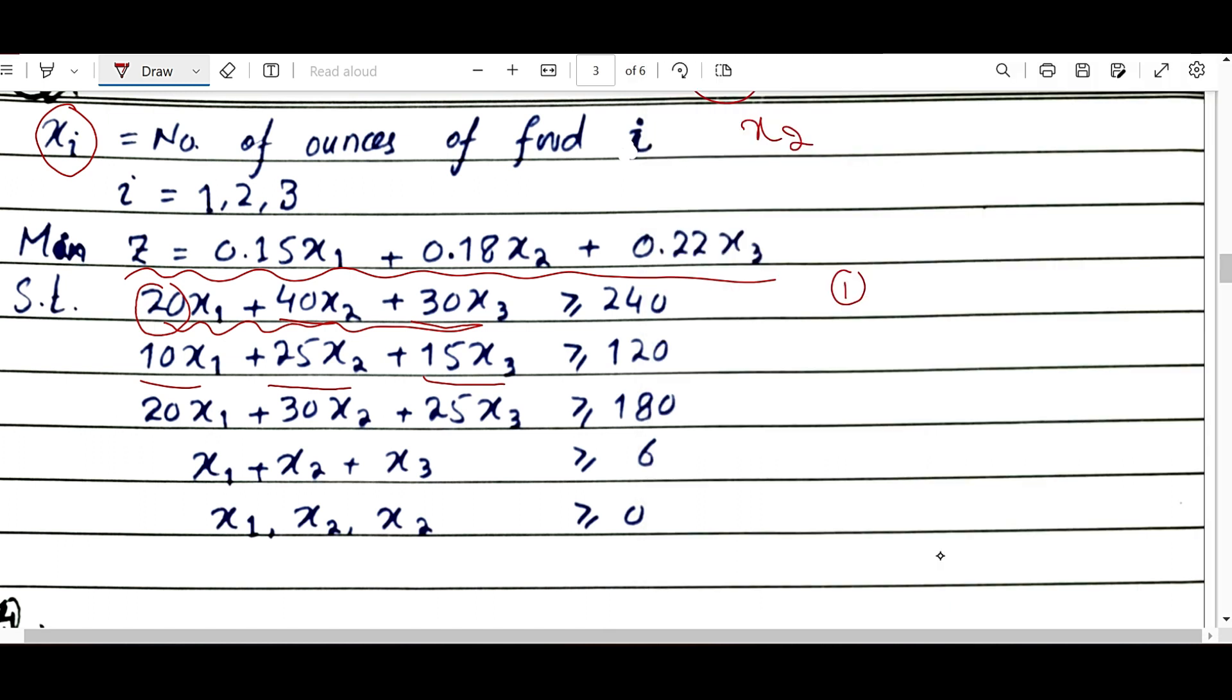Similarly, vitamin three contains 20 mg, 30 mg, and 25 mg, and its minimum requirement is 180. So 20x1 + 30x2 + 25x3 ≥ 180.